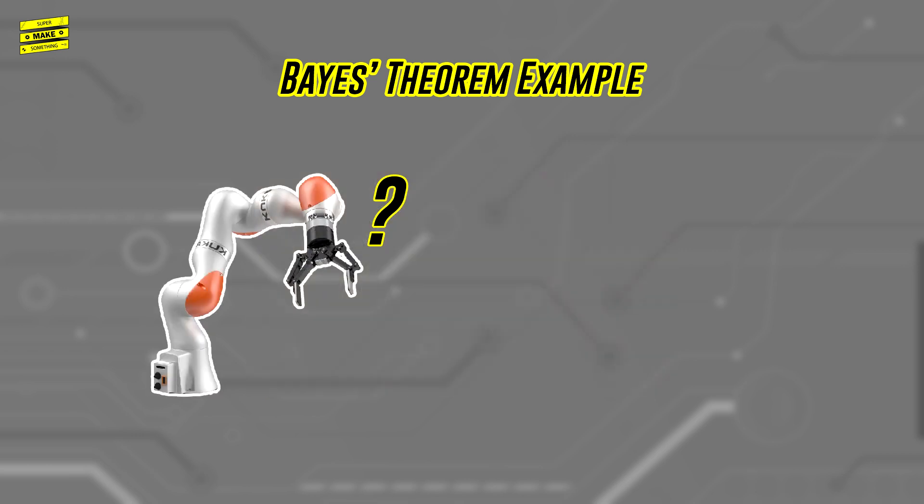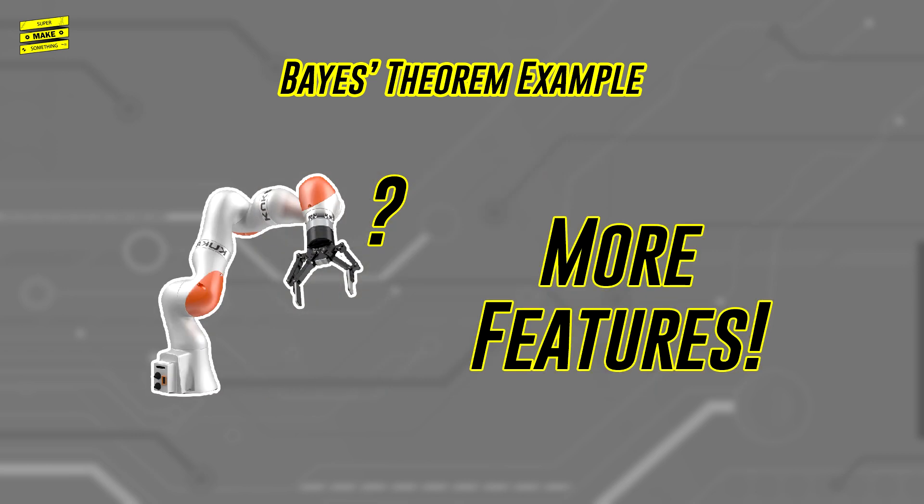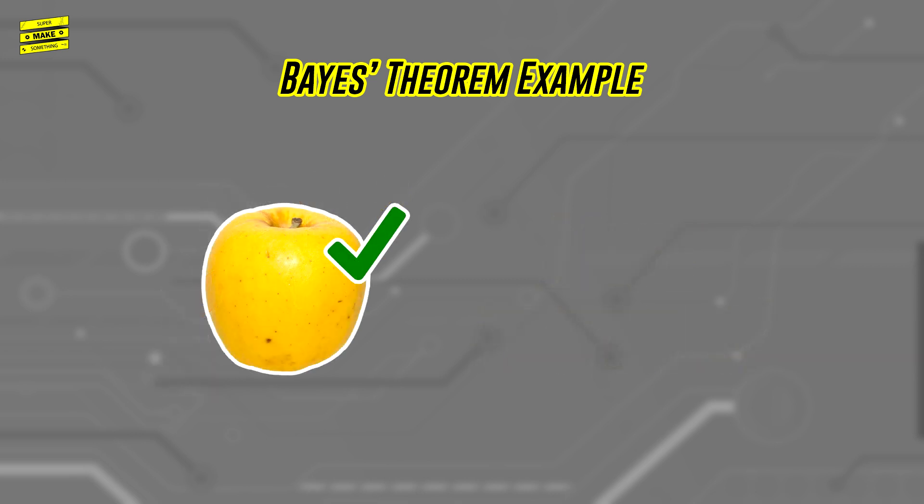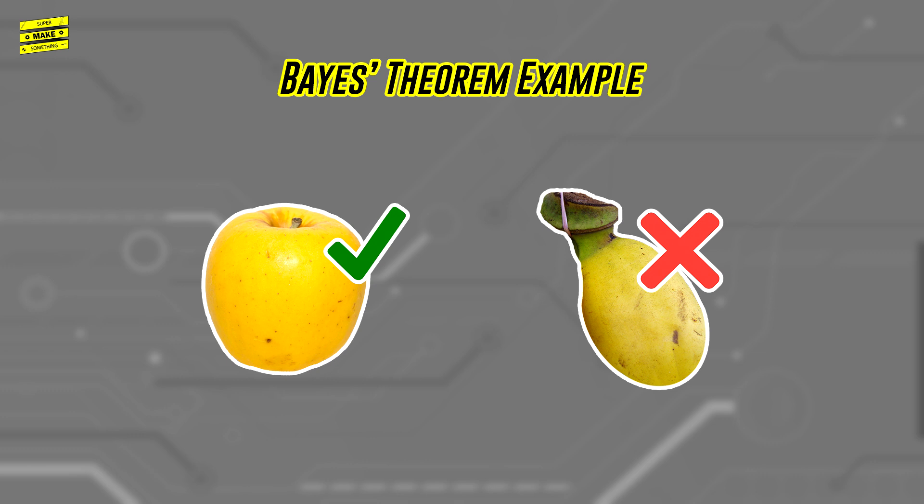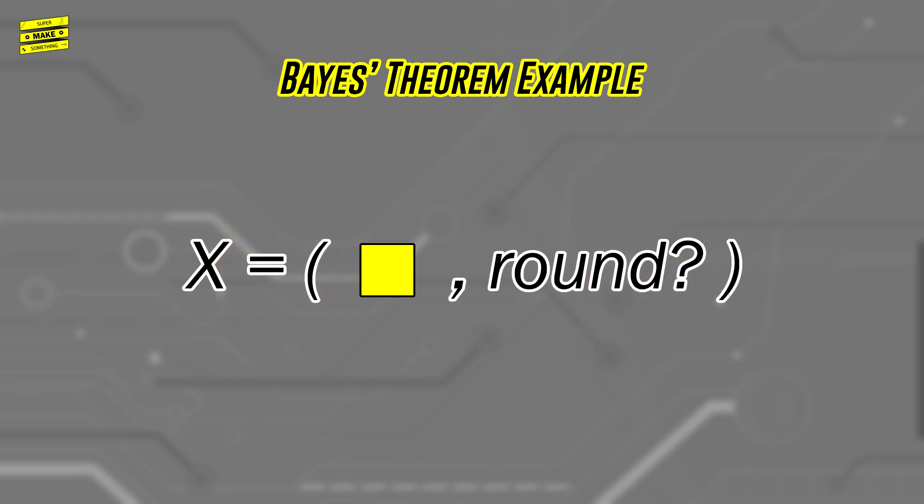So how do we fix this problem? One way is to add more features to boost our chances of uniquely describing each type of fruit. While yellow apples certainly exist in the real world, we know with 100% certainty that round bananas do not. Therefore, adding a second feature that describes a fruit's shape could help to save the day.